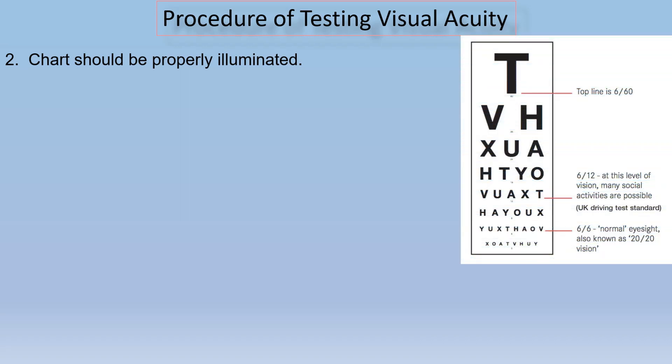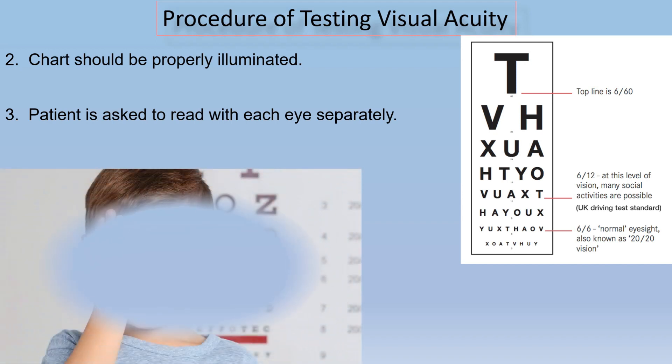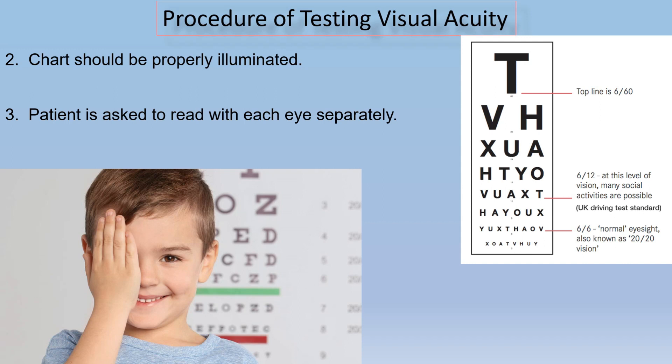Step number 2: Chart should be properly illuminated — the chart must be properly visible. Step number 3: Patient is asked to read with each eye separately. We need to test each eye of the patient separately. Meaning, by blocking the right eye we check the left eye, and by blocking the left eye we check the right eye.